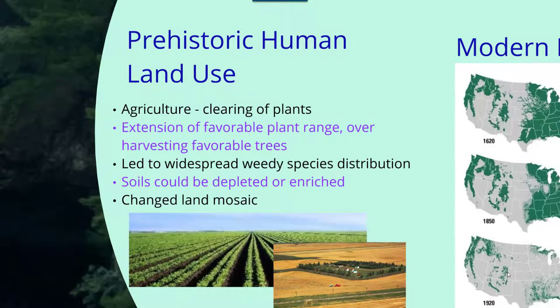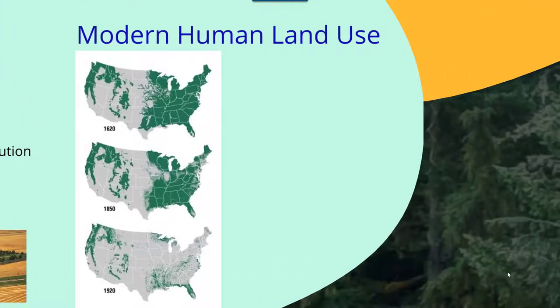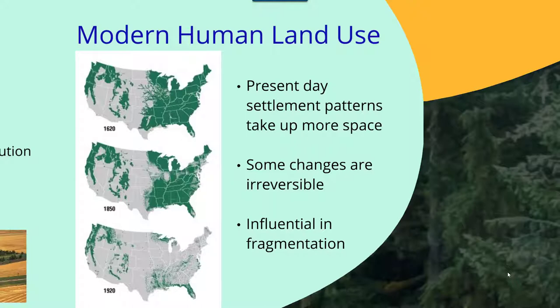There are also anthropogenic effects that occur within a habitat or ecosystem. Pre-historically, humans have contributed changes to the land through agriculture involving the clearing of plants, extension of favorable plant ranges, and overharvesting of trees. Prehistoric human land use has led to widespread weedy species distribution and either the depletion or enrichment of certain soils, and ultimately large changes to the land mosaic. Modern human land use contributes to this as well, but in slightly different ways — present-day settlement patterns take up more space per individual, some changes due to human land use are irreversible such as clearing of wetlands, and there's a large influence of fragmentation by modern human land use.